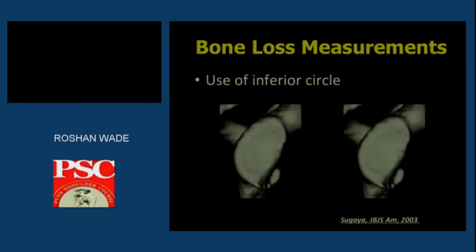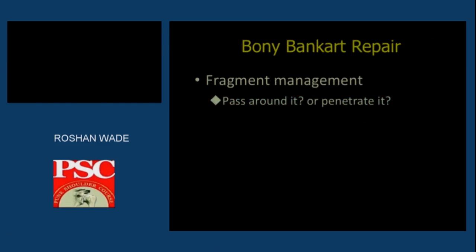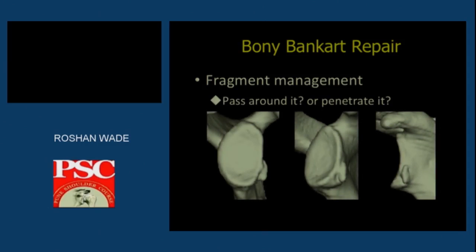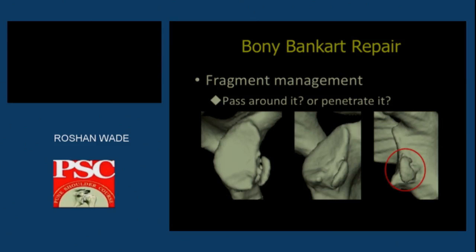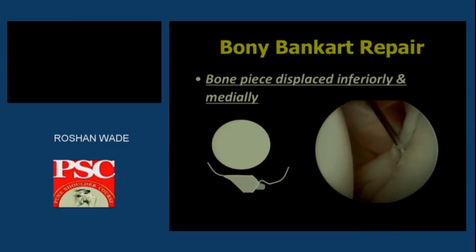Bone loss analysis can be done by two techniques as described by Dr. Sugaya: the circle method, where you describe the loss of diameter as a tangential diameter with respect to the longitudinal axis of the glenoid, or by loss of surface area. For penetrating the bony fragment, one can use the bone stitcher designed by Dr. Hiro Sugaya, which is commercially available, or a spectrum-type hook that can easily penetrate the bone.